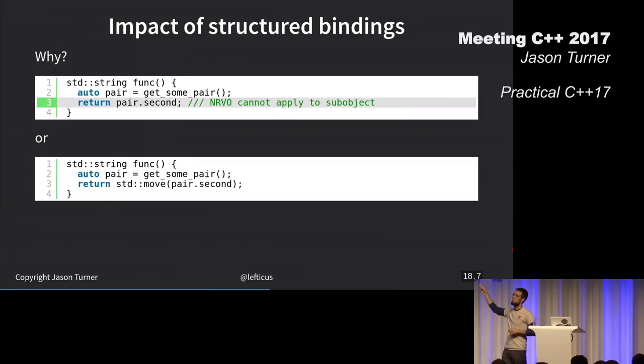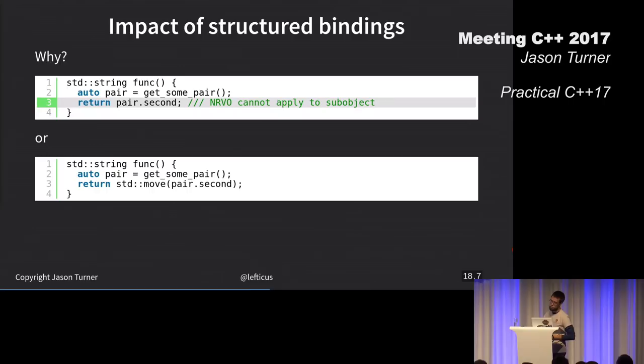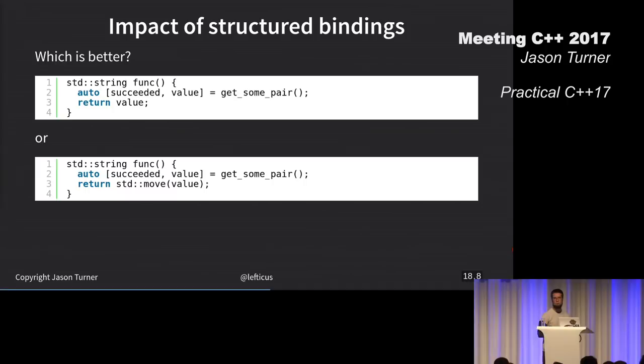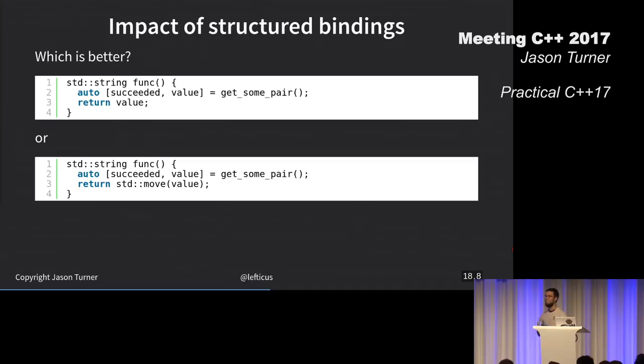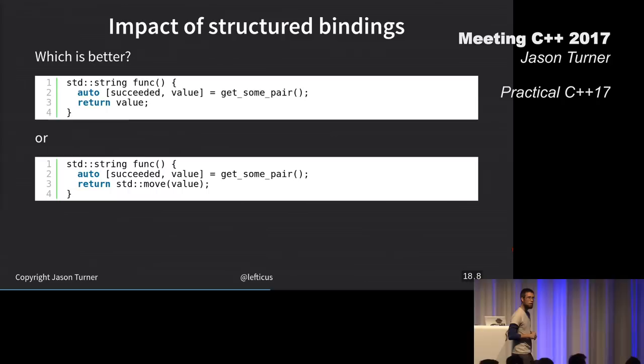Named return value optimization can't apply to the sub-object. Now we are using structured bindings. Which option is better? Everyone agrees that the first one is better, right? No. Who doesn't agree? Why don't you agree? It's also a sub-object. RVO cannot apply to a sub-object.